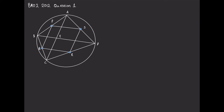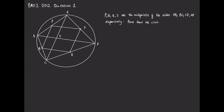This is obviously a very long video because it's such a complex, multi-part solution, but it's also a really nice one so please stick around. We'll state the facts we have so far: P, Q, R and S are all midpoints of the sides AB, BC, CD and AD respectively. AC and BD are the diagonals of the cyclic quadrilateral ABCD and they intersect at point E. Now we'll address the question directly: prove that the circles EPS and EQR have the same radius.